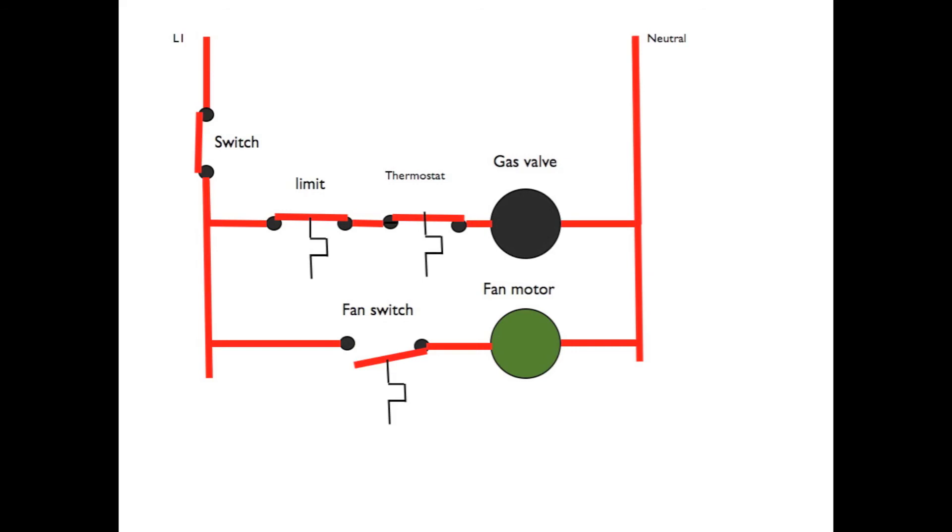So the sequencing here is going to be through the switch, the system switch, the normal closed limit, the normally open heating thermostat to energize the gas valve.